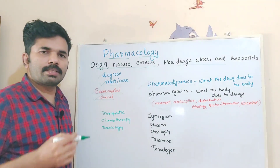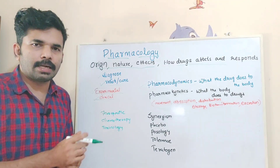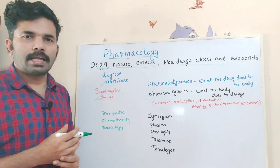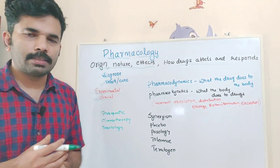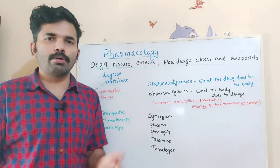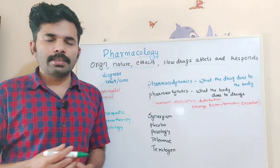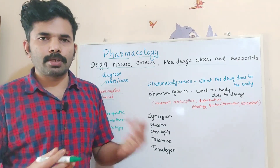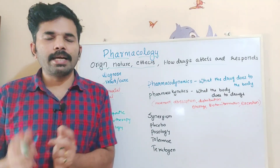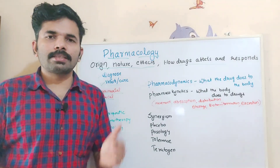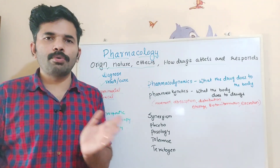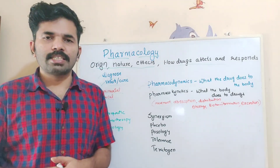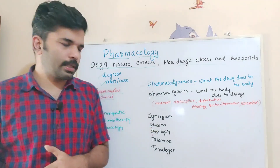Chemotherapy — chemo means chemicals. Chemotherapy medicines are injected as high-dose chemicals to cure illness, especially cancer. Cancer cells are targeted using chemotherapy drugs. Examples include Adriamycin and Cisplatin.